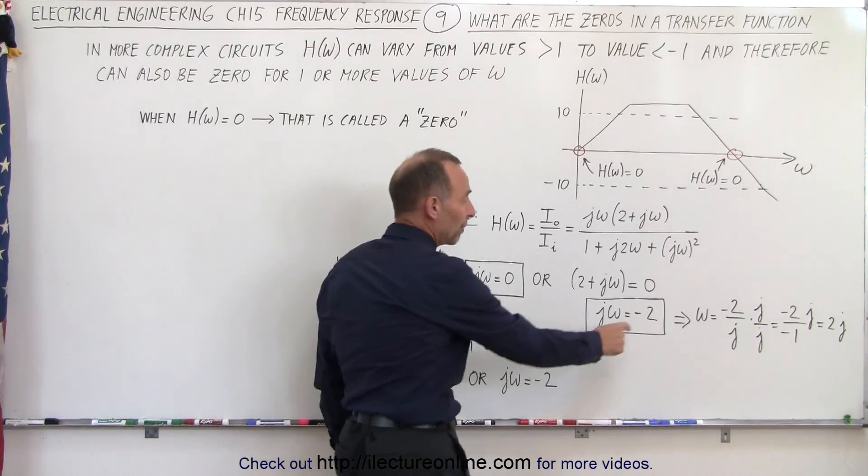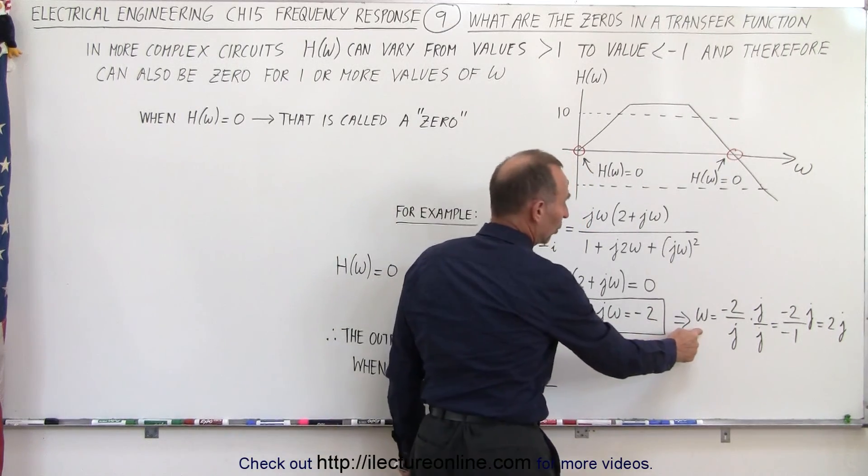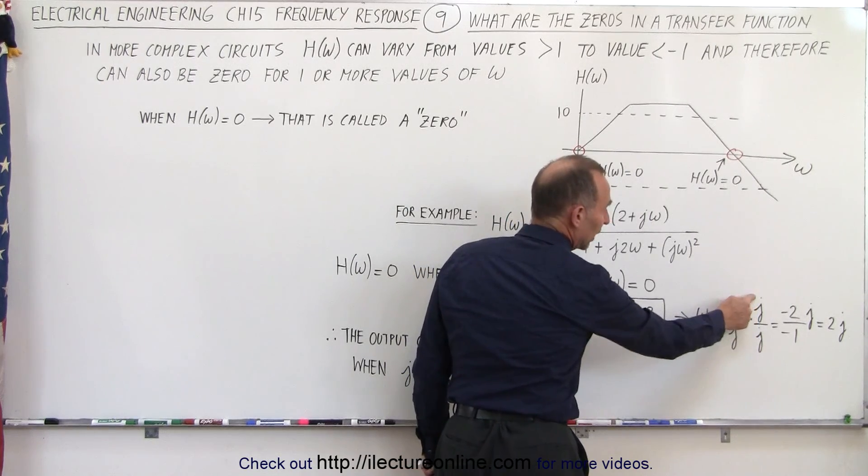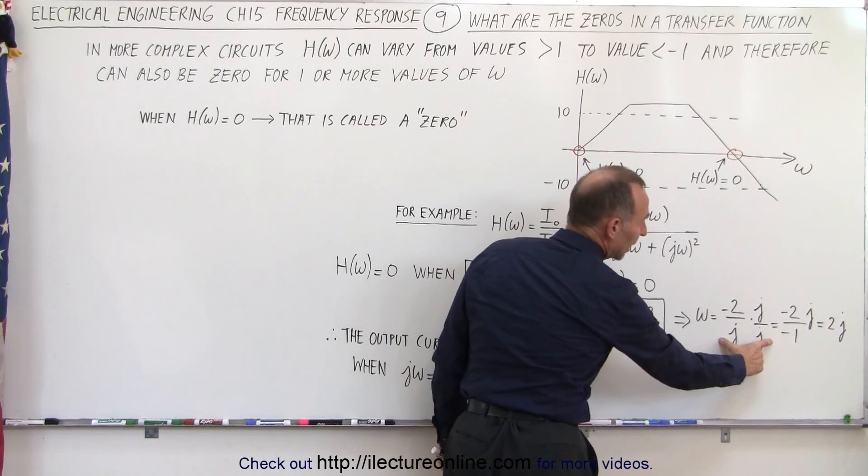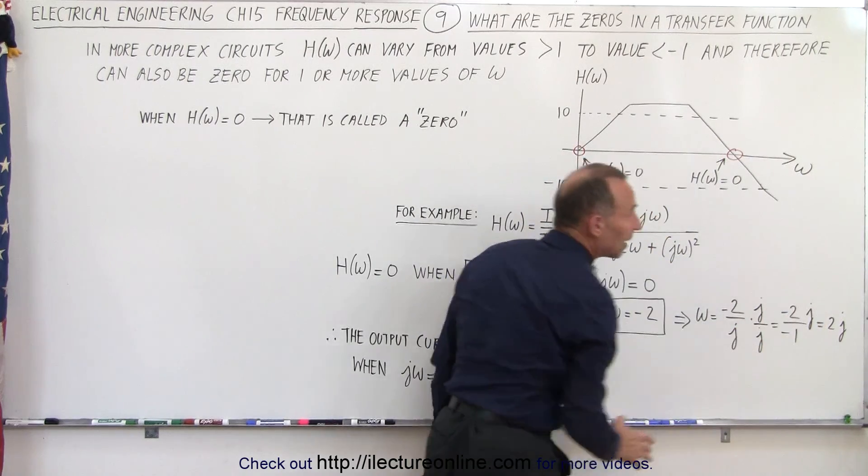We can actually solve this for omega. So in this case, of course, omega is 0. In this case, omega will be minus 2 divided by j. If we then multiply both the numerator and the denominator by j, then we have a minus 1 in the denominator. In the numerator, we have a minus 2j, or omega can be written as 2j.